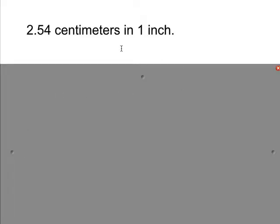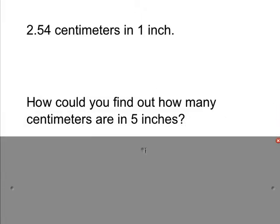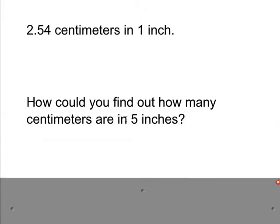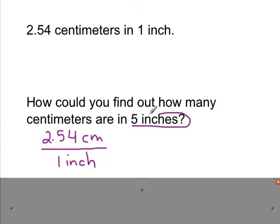So for example, in one inch we have 2.54 centimeters, so just a little bit over two and a half centimeters. So using that knowledge, how could you find out how many centimeters are in five inches? Well, one thing you could do is set up a ratio. If you know that there are a little bit over two and a half centimeters in one inch, you want to find out how many are in five inches.